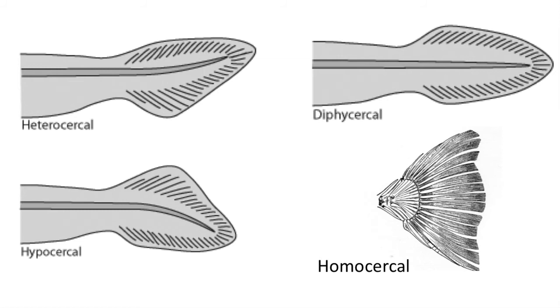Now let's define some terms in regard to the traits of the tail in fishes. We can see some fish that have a notochord that extends into the upper and lower lobes of the caudal fin, or the tail. If the notochord or spinal cord extends into the upper lobe, we call this the heterocercal tail.